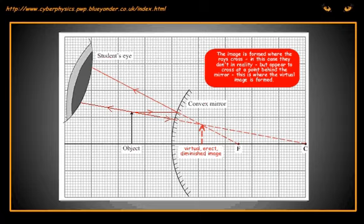A real image is formed where the rays cross. In this case, they do not cross, but continue to travel further apart. Therefore, we have to look for a point where the dashed construction lines cross instead.